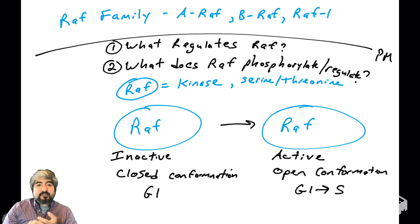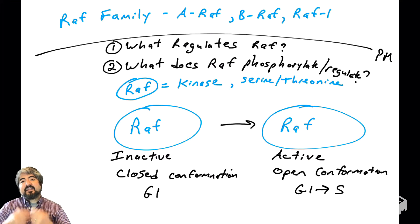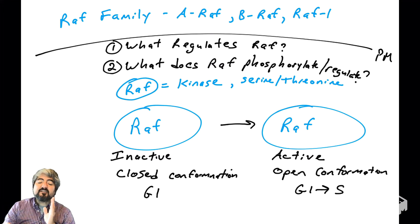When cells get a signal to go through the cell cycle, go from G1 to S phase, something's going to happen to RAF. It's going to activate. Its enzyme activity is going to get active by changing its conformation, and it's going to be able to phosphorylate its substrate.